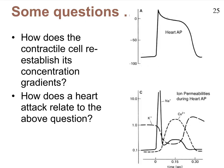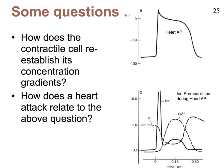Here we see simple sketches of the heart's action potential in the contractile cells, easily recognized by the plateau. In the bottom graph, we see the change in permeability: first sodium ions flow into the cell rapidly, followed by the much slower influx of calcium ions, and then finally potassium ions flow outward, causing repolarization.